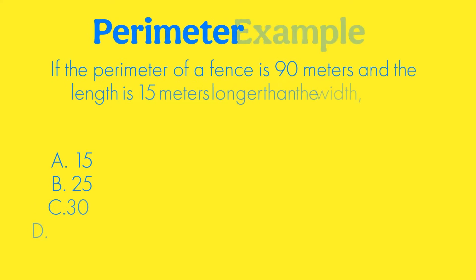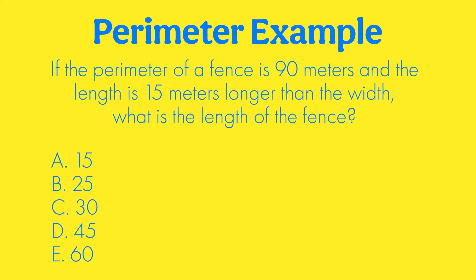If the perimeter of a fence is 90 meters and the length is 15 meters longer than the width, what's the length of the fence? So what I would want you to do is draw a rectangle that would represent a fence and then label the length and label the width. Even if you don't put in X's, you could label it X for one side and X plus 15 for the other side because the length is 15 meters longer than the width, but you don't have to do that.